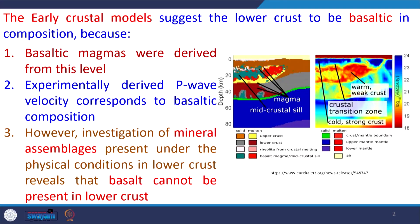In our earlier class, we were confining ourselves to the crustal composition and mostly found that the crust, particularly the continental crust upper crust, is of granitic to granodioritic composition. Our discussion was there to determine the crustal composition at the lower level. Continuing this discussion, the early crustal model suggests that the lower crust is of basaltic composition.